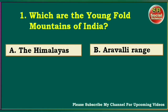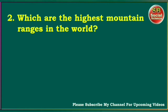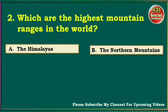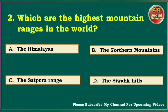The answer is the Himalayas. Which are the highest mountain ranges in the world? The Himalayas, the Northern Mountains, the Satpura Range, the Shivalik Hills. The right answer is the Northern Mountains.